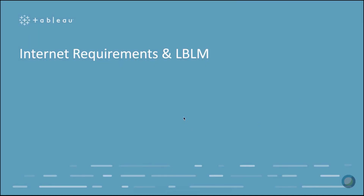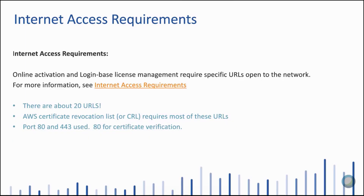Let's talk about internet requirements and login-based license management. We get a lot of questions in technical support about the many URLs that need to be open on the network in order to use online activation and login-based license management. You can simply Google 'Tableau internet access requirements' to find the document that lists the URLs. We need these 20 URLs because we host Tableau license service on AWS, and there's a certificate revocation list, or CRL, that requires them. Port 80 and 443 are also needed — port 80 for certificate verification.